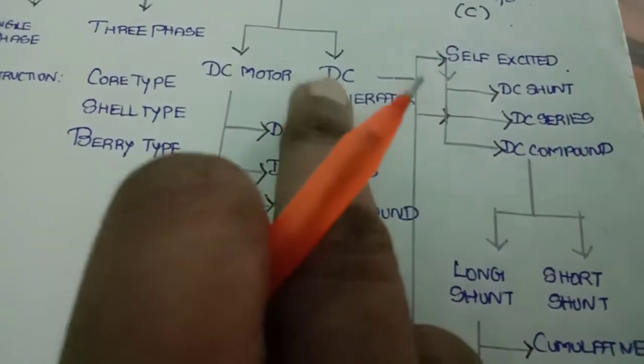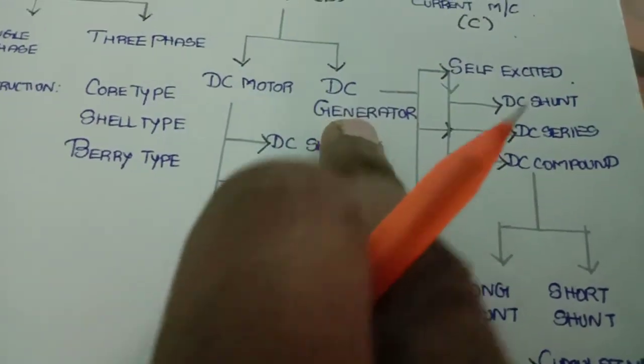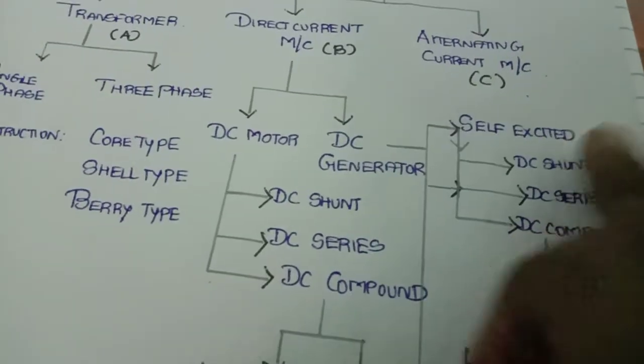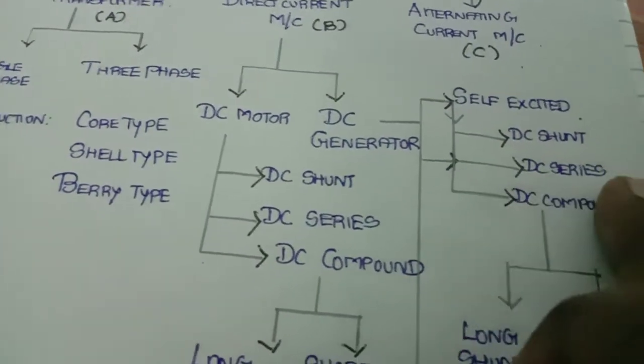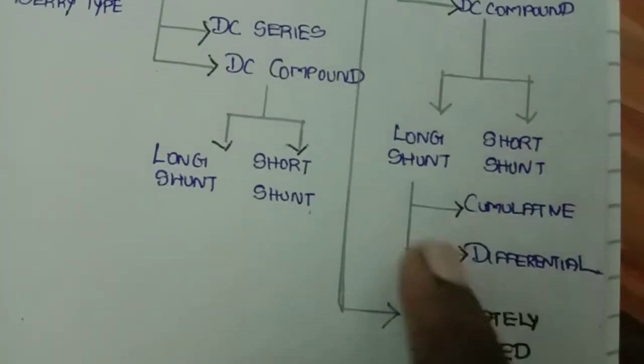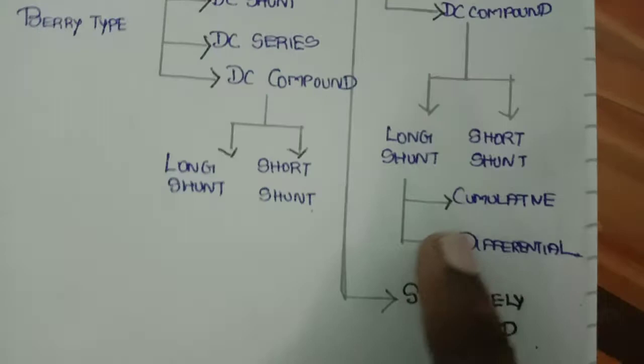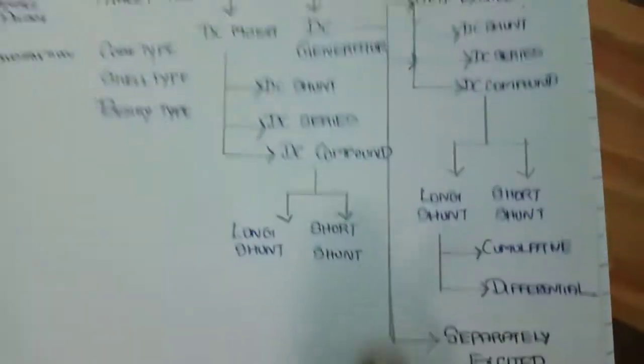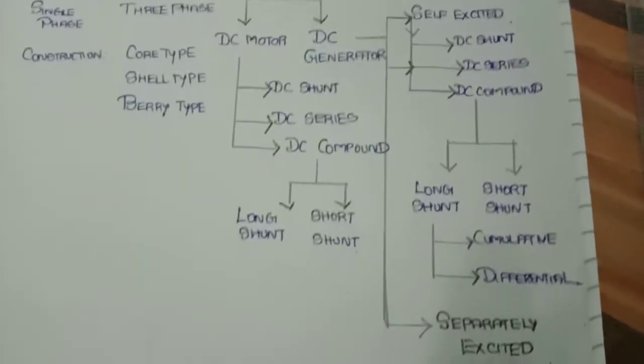Simultaneously, we can classify a DC generator based on the excitation. One is self-excited. In self-excited, we can say DC shunt, DC series, DC compound. This compound can be classified as long shunt or short shunt. Further, these two can be classified as cumulative and differential. The other type is separately excited DC generator.